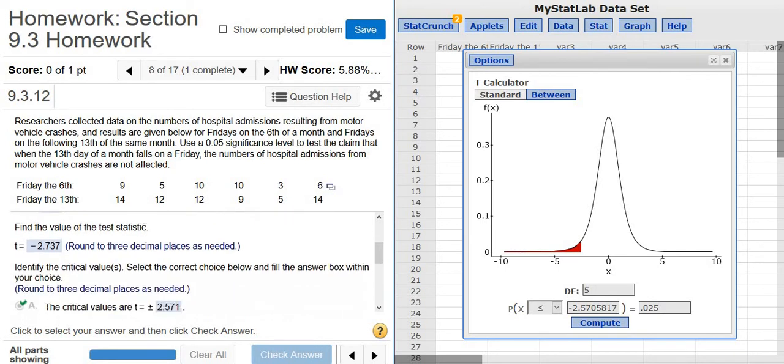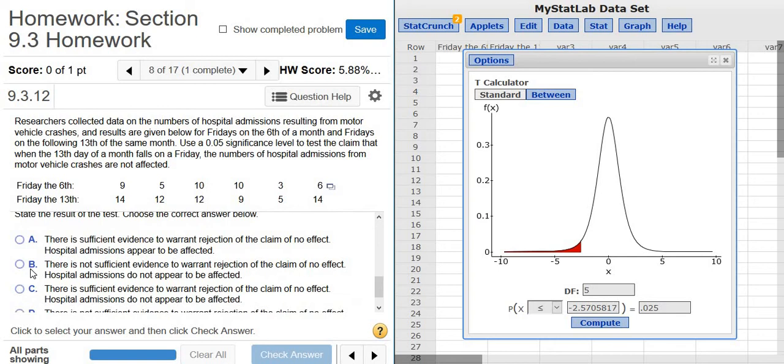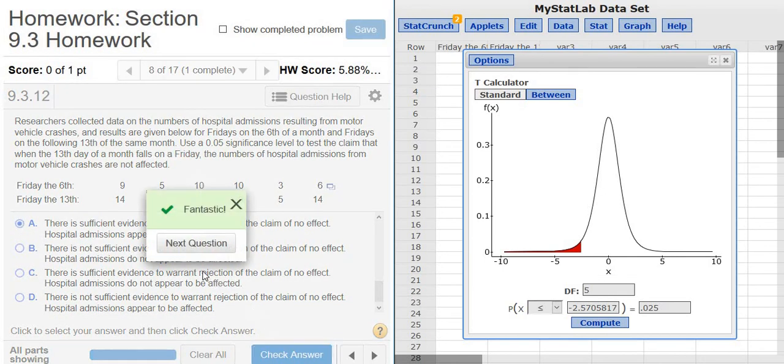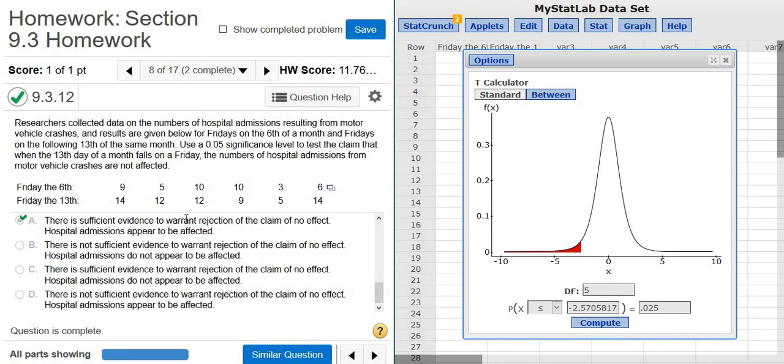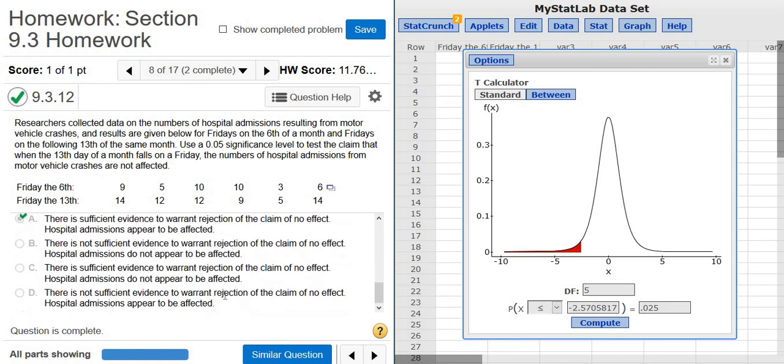There is sufficient evidence to warrant the rejection of no effect. Hospital admissions appear to be affected. So again, there is sufficient evidence to warrant rejection of no effect. Because whenever we reject this, then there is enough evidence to say there is a difference. We do have enough evidence to say that there is a difference between Friday the 6th and Friday the 13th. I hope that made sense. Talked kind of fast and covered a lot of information in almost five minutes.